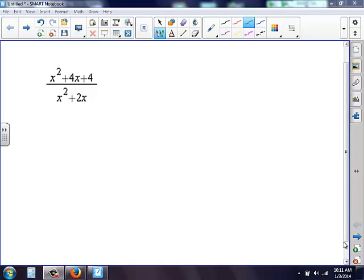Okay, we have x squared plus 4x plus 4 on the top. We have x squared plus 2x on the bottom. Again, don't be tempted to cross off the x squareds. You can't just cross them off.